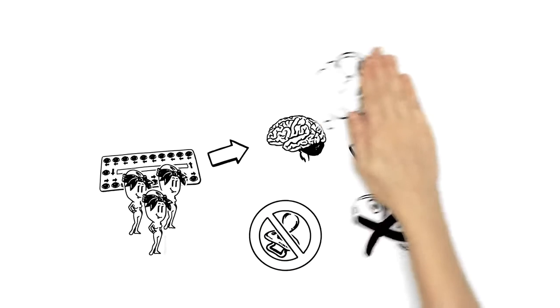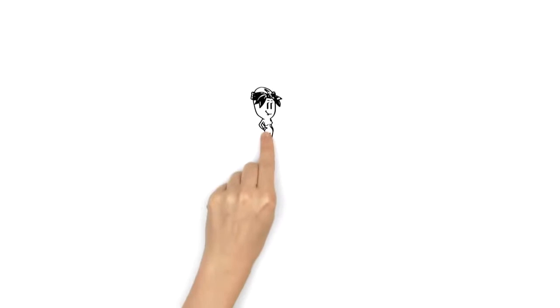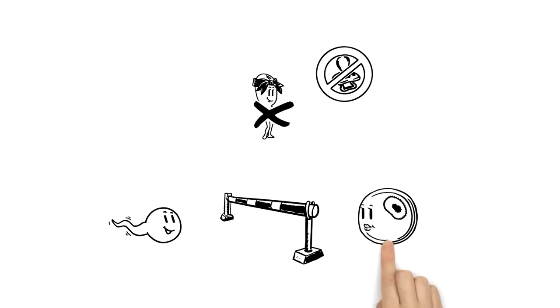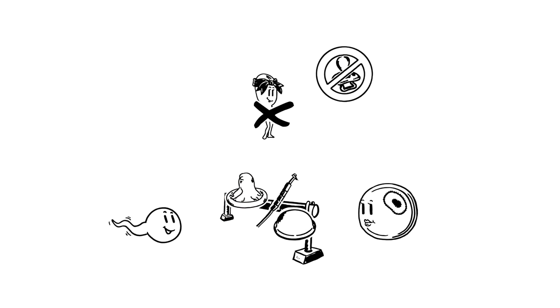But there are also contraceptives that work without hormones. They prevent pregnancy by stopping the sperm on its way to the egg cell. Condoms, copper coils, and the diaphragm work in this way.